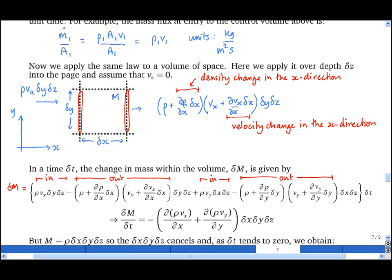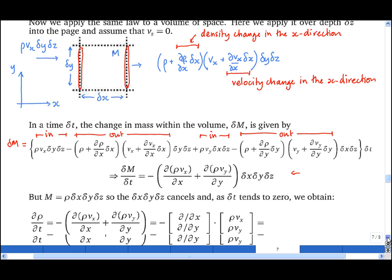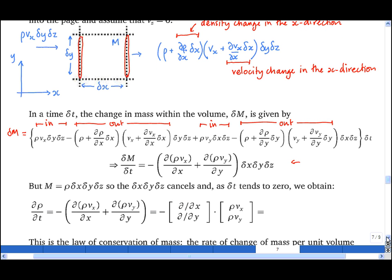By subtracting any identical terms, I end up with the simpler expression underneath. Now we substitute in the fact that the mass inside the control volume is rho times delta x times delta y times delta z. Substitute that in, and we find that d rho by dt is equal to the expression shown here.